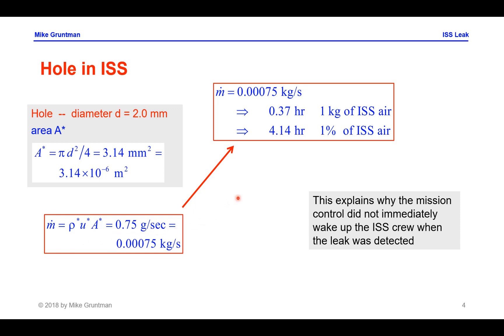Now this leak rate translates into the following very important numbers: one kilogram of air of the International Space Station would be lost in roughly 0.4 hours or a little bit more than 20 minutes. And to lose 1% of the station air would have taken a little bit more than four hours. So this slow leak rate explains why the mission control did not immediately wake up the crew of the International Space Station when the leak was detected.